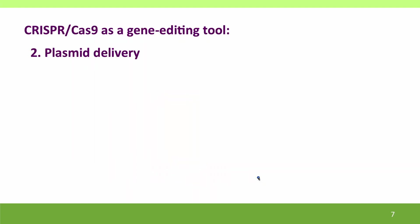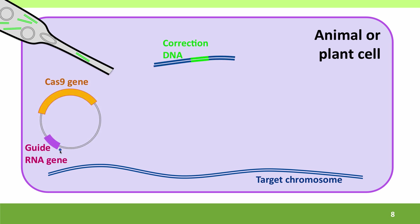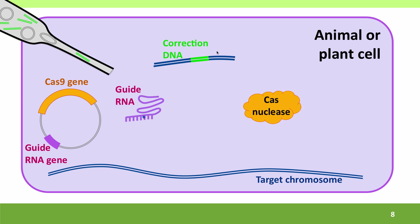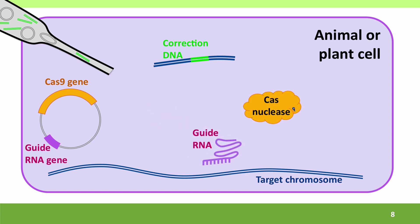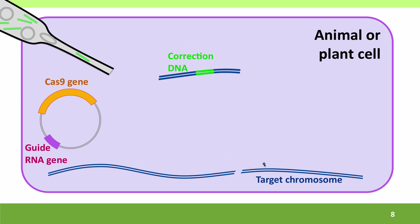This technique is simple to describe but a bit of a pain to do because you have to purify the RNA, which is very fussy, and purify the protein. A simpler technique lets the cell do more of the work by injecting a plasmid that contains genes for the Cas9 nuclease and the guide RNA, along with the correction DNA. The cell then produces the guide RNA and Cas9 nuclease. As before, the guide RNA binds to the chromosome, the Cas9 nuclease makes a cut, and the correction DNA repairs it by recombinational repair.